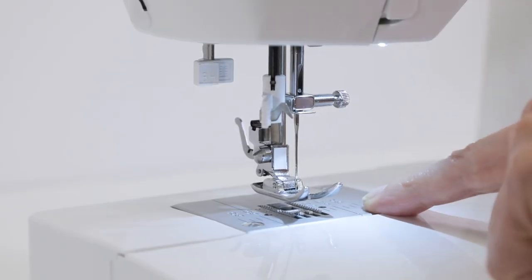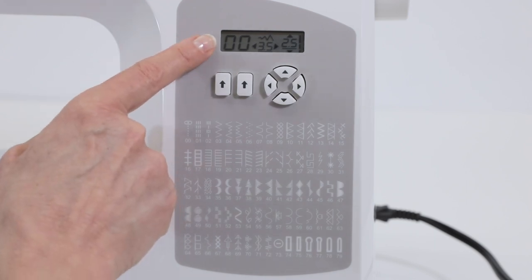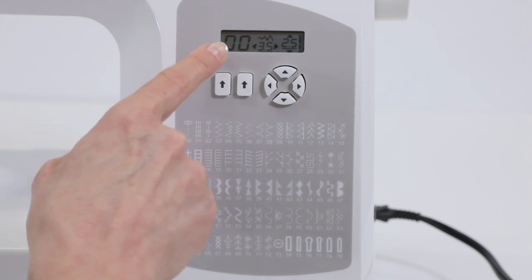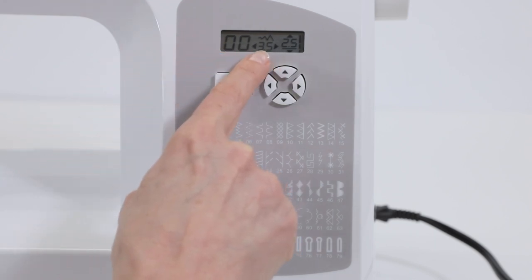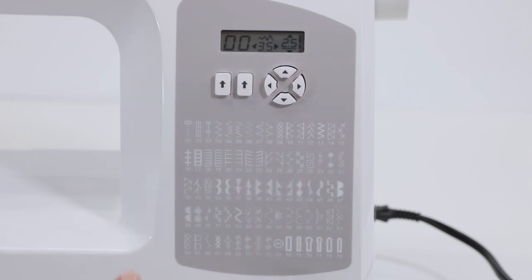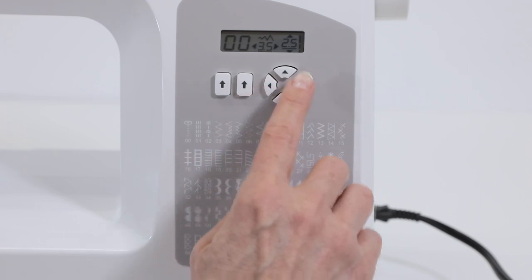This is your needle plate. This is your LCD screen, and it shows your stitch selection by number, as well as that stitch's width and length setting. The front panel of the machine has the stitch selections printed for you, and they're all shown there by number. So you use these buttons to pick your stitch, and these buttons to adjust the width and length.